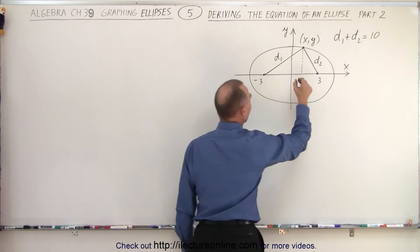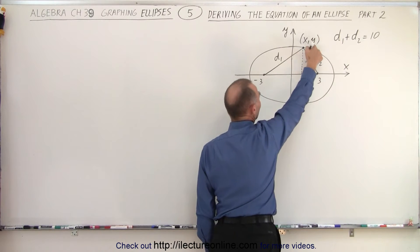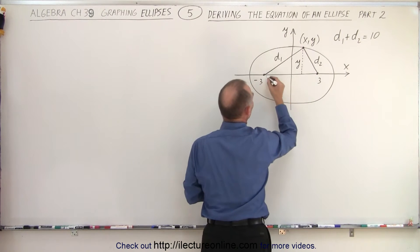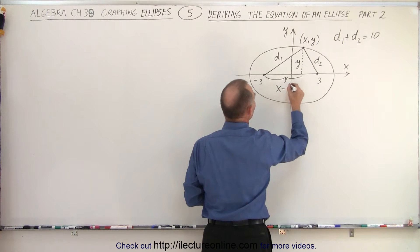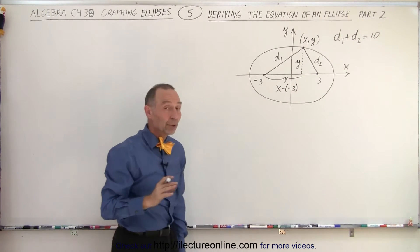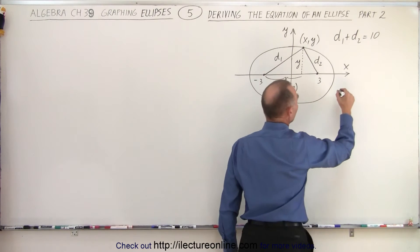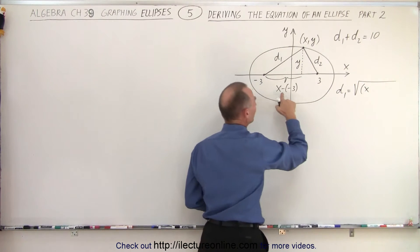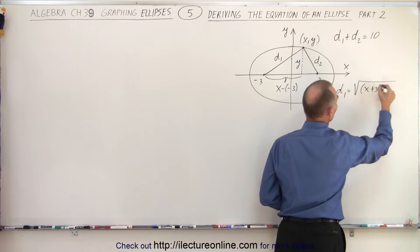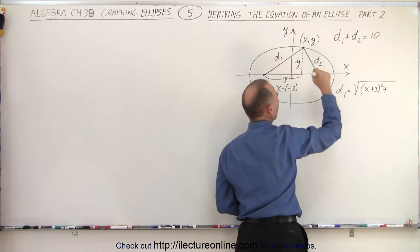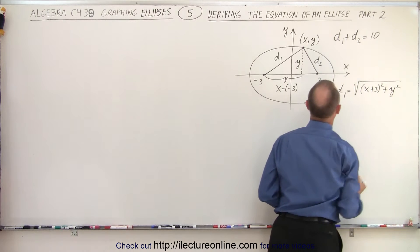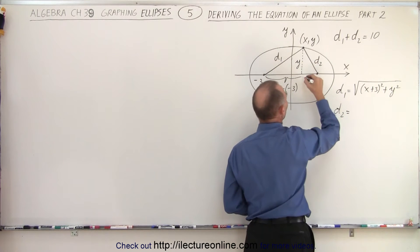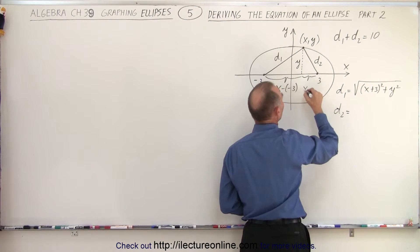The height of this triangle, since that's the general point x, y, the height of the triangle will be y. And then the length of this triangle will be x minus negative 3. So this distance here will be x minus negative 3. So now that we know what that is equal to, we can say that d1 is equal to the square root of the quantity x minus negative 3, which is essentially x plus 3, quantity squared plus y squared.